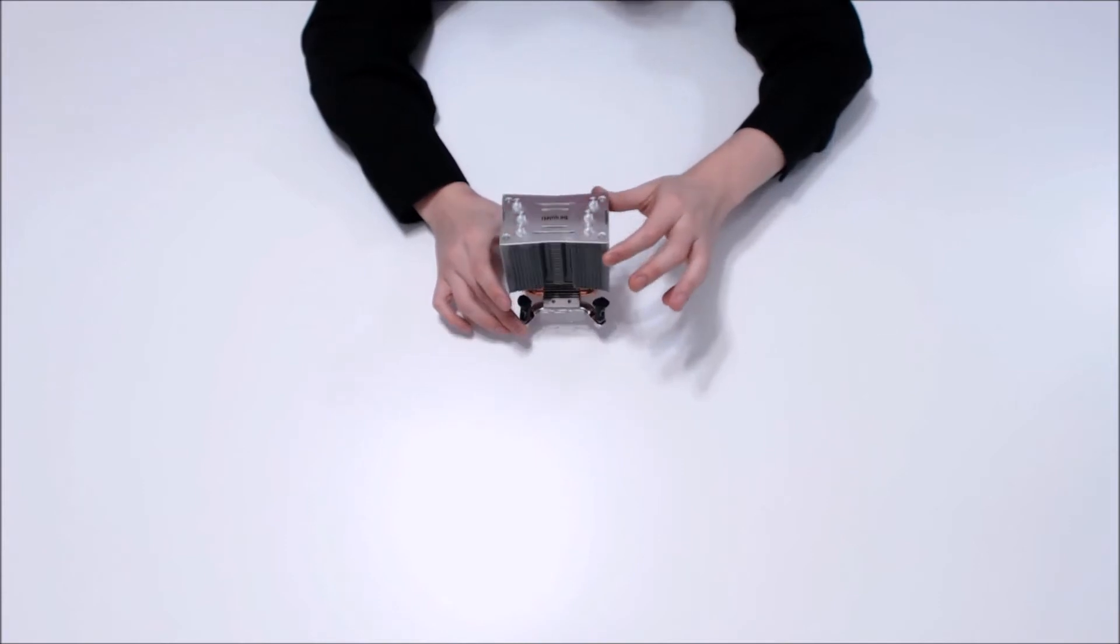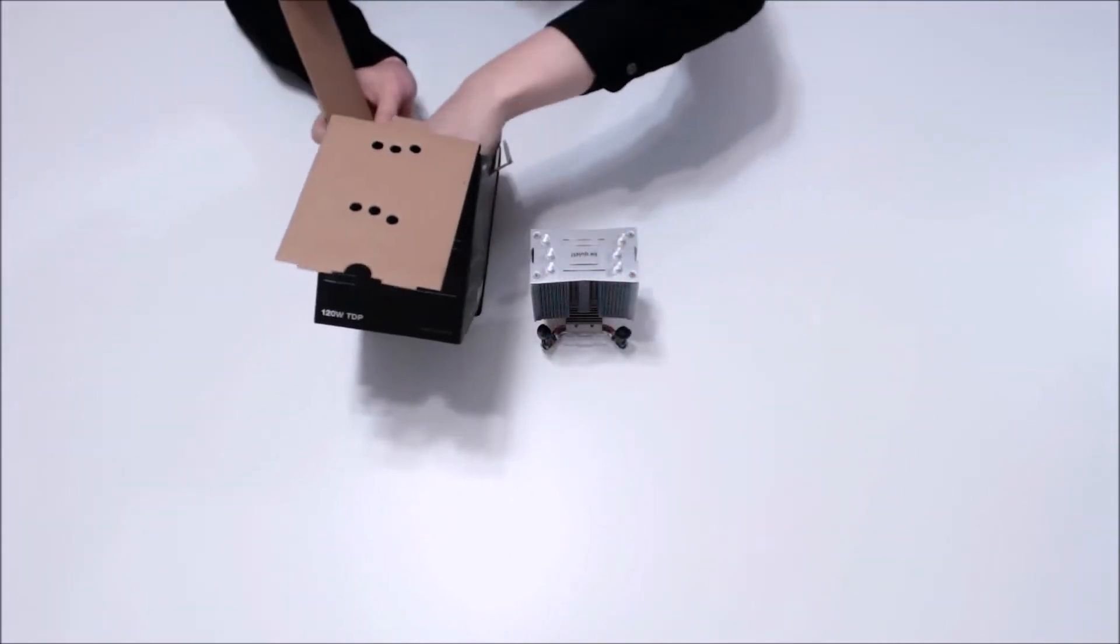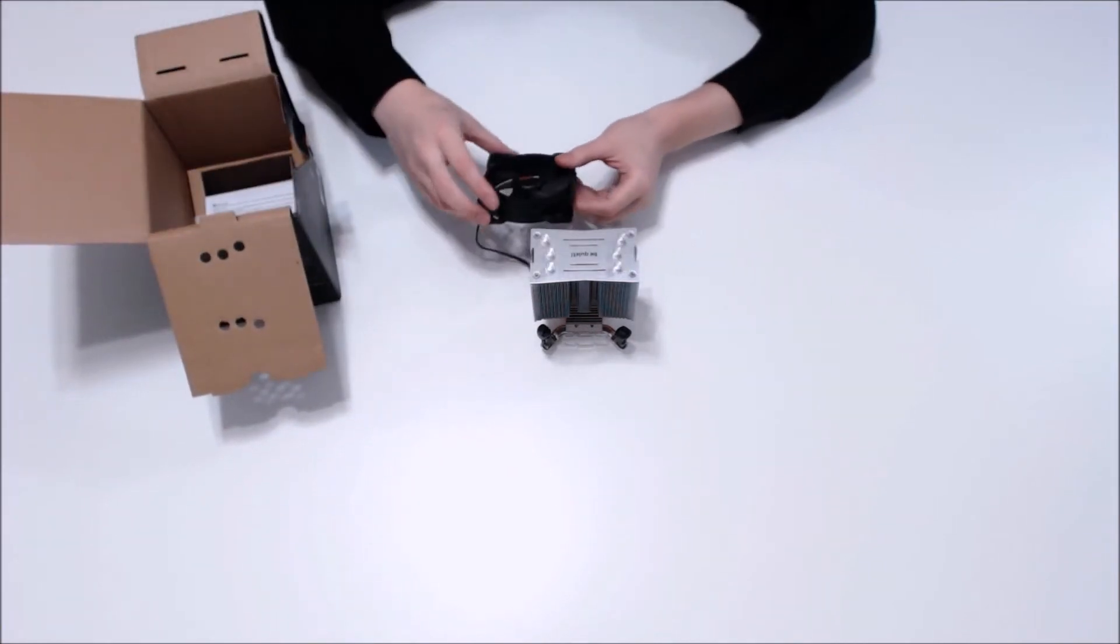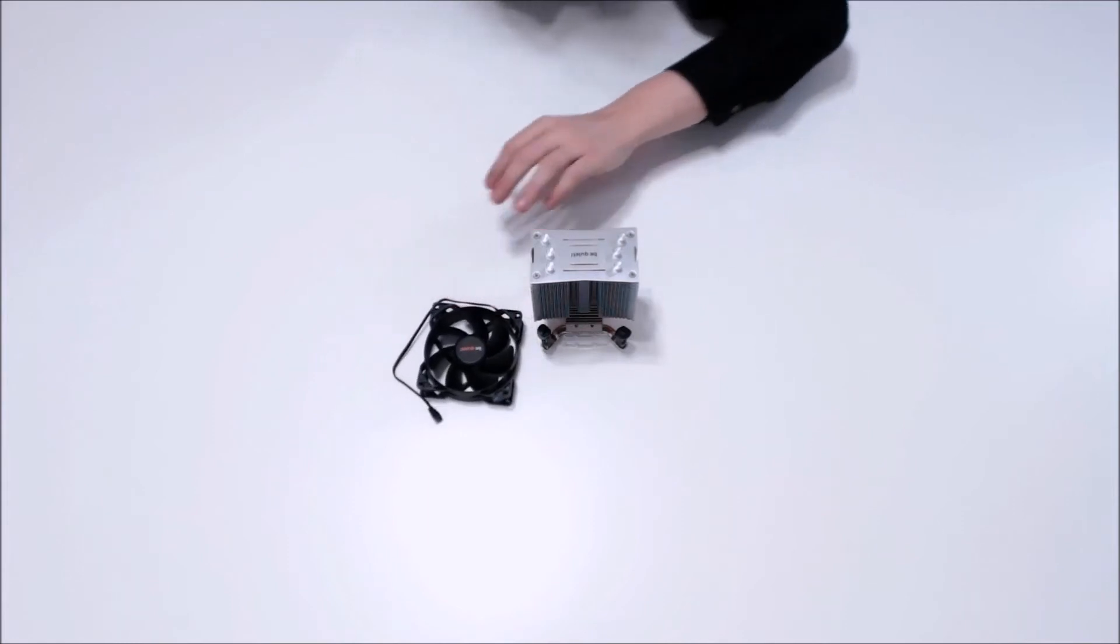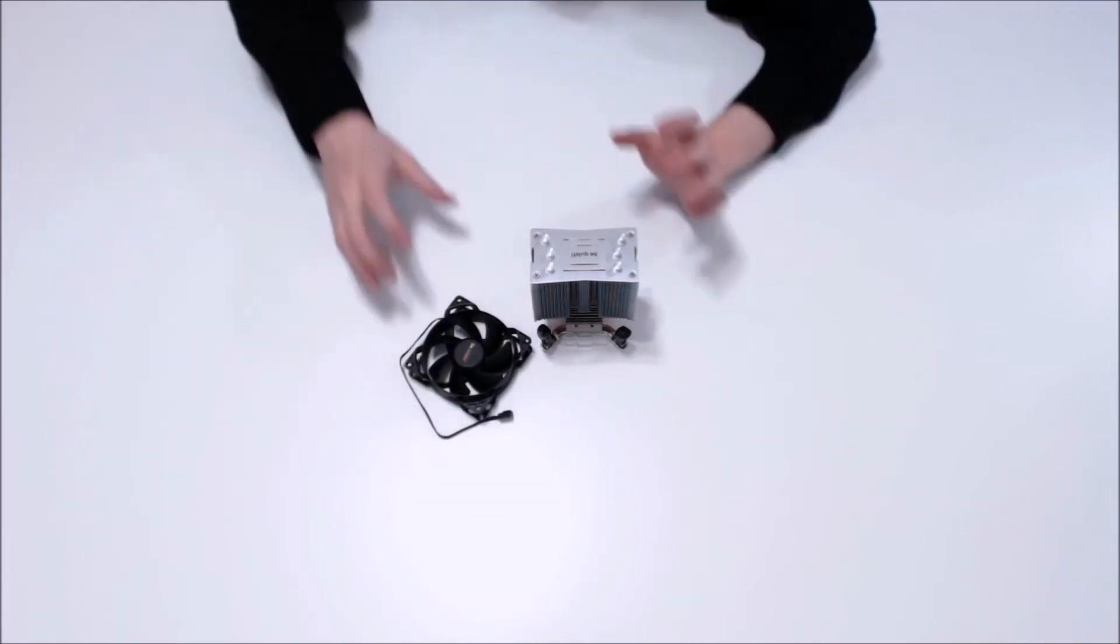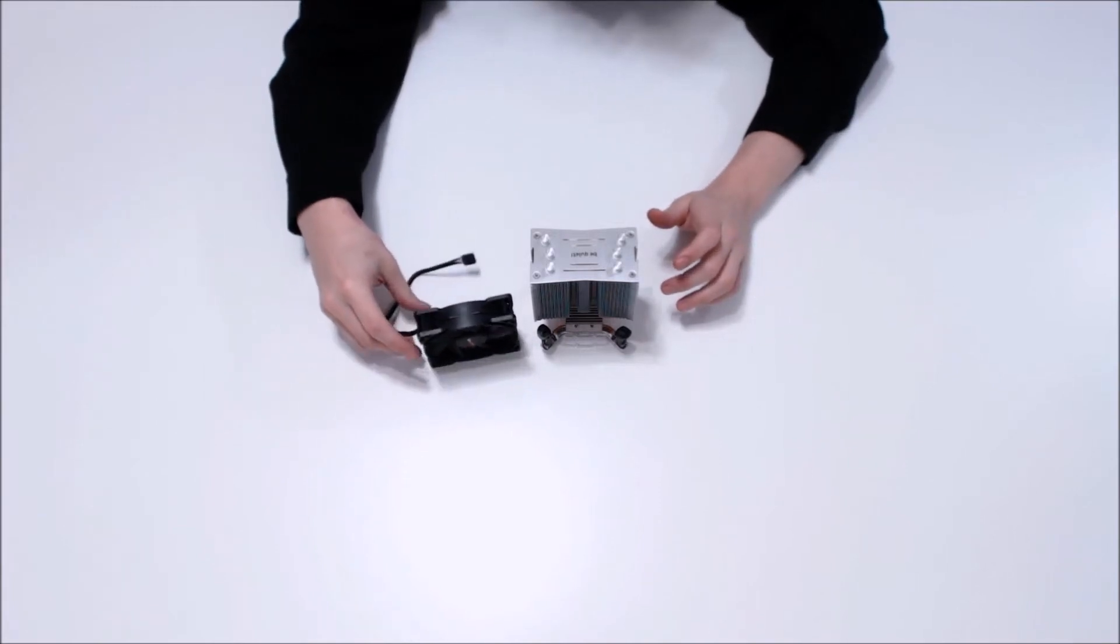We've got three 6 millimeter heat pipes. Now let's see what else we have in the box here. We've got a PWM controlled 92 millimeter fan, operates at 2000 RPMs at around 25 decibels under full load.